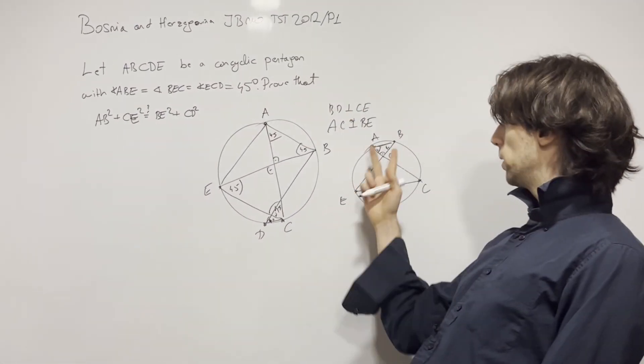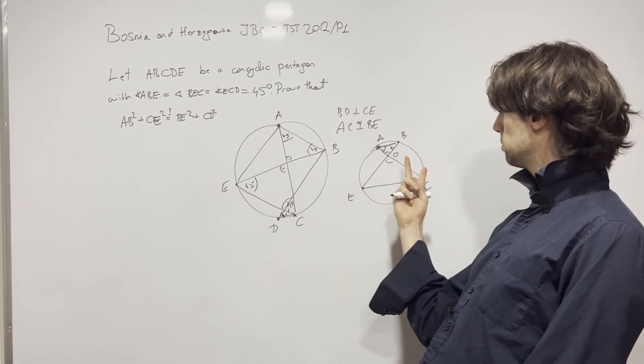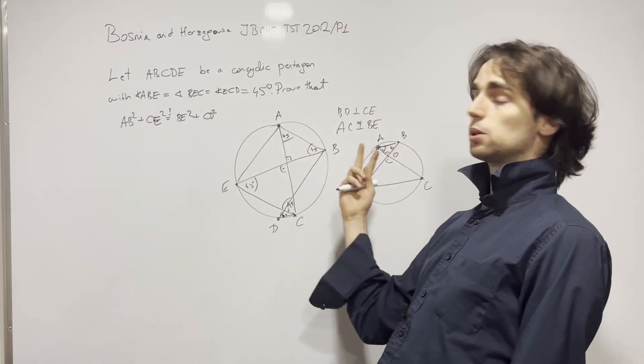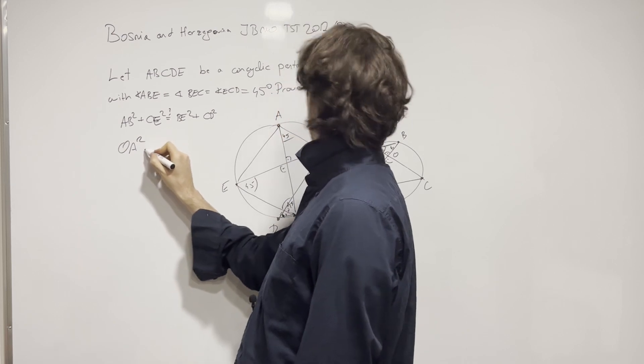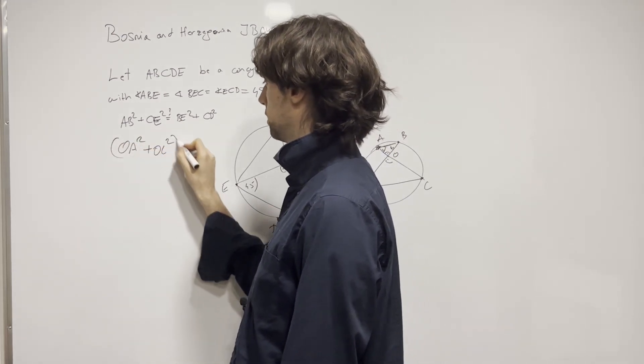We will have, so this is a question mark. But AB squared plus CE squared, given this is 90, is OE squared plus OC squared plus OB squared plus OA squared, which is equal to OA squared plus OC squared times two.